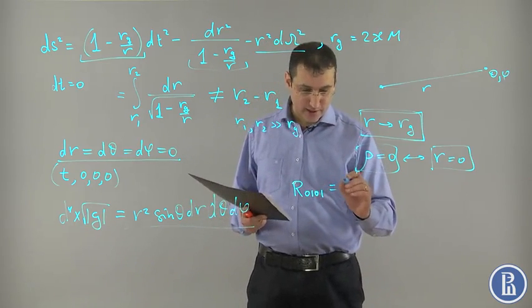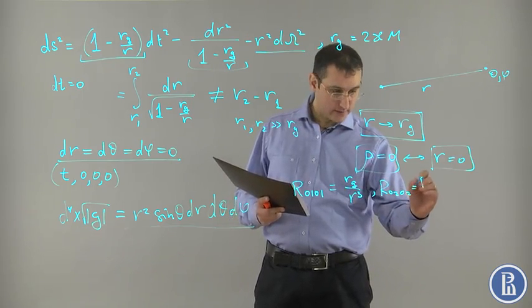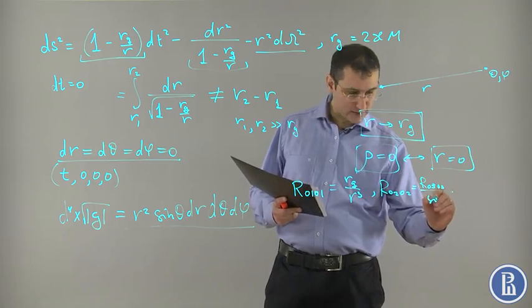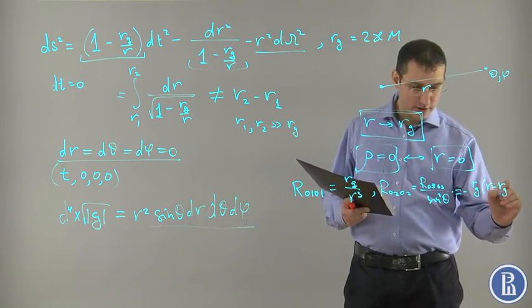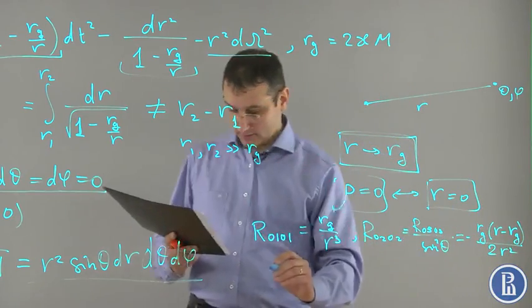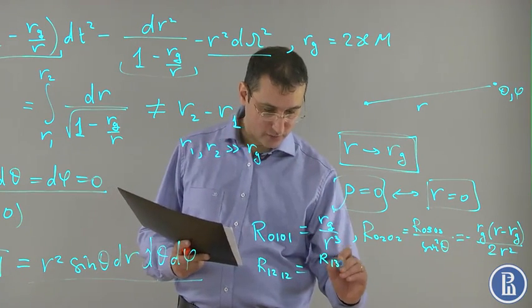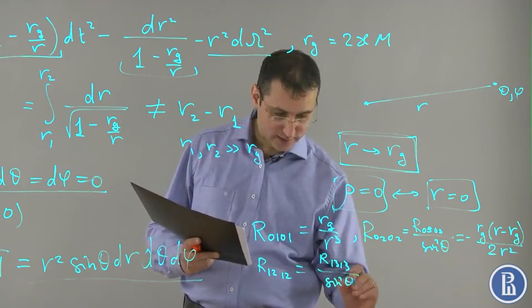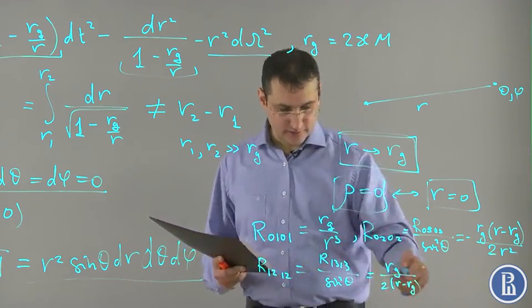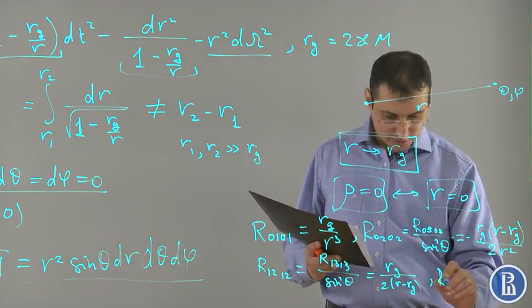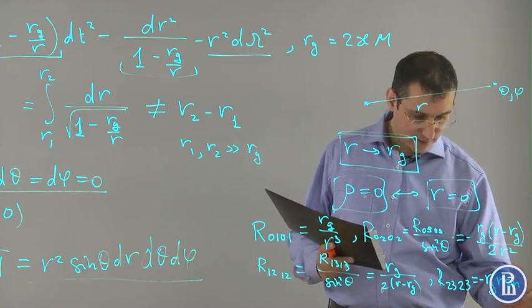Let me write all the nonzero components of Riemann tensor. One of them is like this. The other one is related to this one by the sine squared of theta and equals minus Rg R minus Rg over 2r squared. And R1212 equals R1313 divided by sine squared theta. This equals Rg divided by 2r minus Rg. This component of Riemann tensor is singular at R equals Rg. R2323 equals minus Rg R sine squared theta.